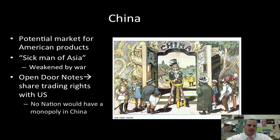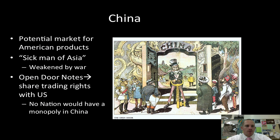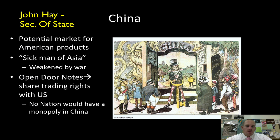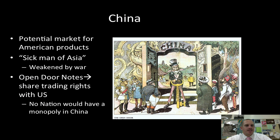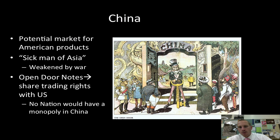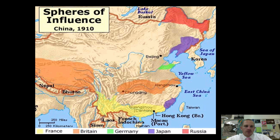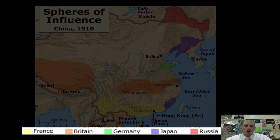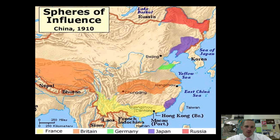China is seen as a potential market for American products. It is known as the sick man of Asia because it has been weakened by war repeatedly, and much of its country has been divvied up by European powers. The Open Door Notes were written by John Hay because China was slowly being closed off to American trade. He wrote letters to other imperial powers stating that we should share trading rights to China and that no nation would have a monopoly there. You can see the sphere of influence map showing France, Britain, Germany, Japan, and Russia each carving out areas of China.